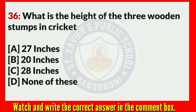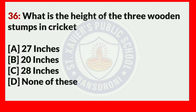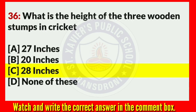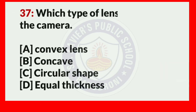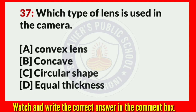What is the height of the three wooden stumps in cricket? Answer C: 28 inches. Which type of lens is used in a camera? Answer A: Convex lens.